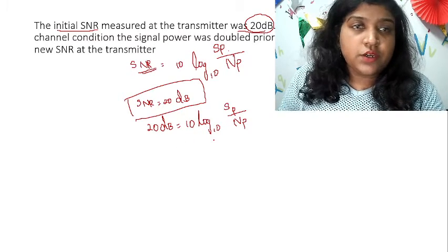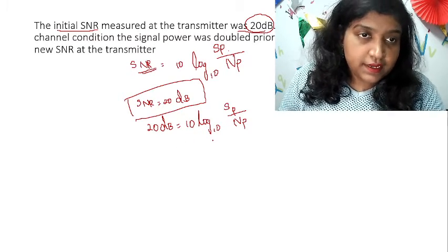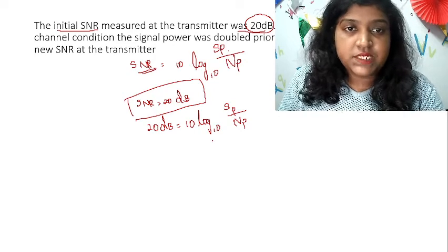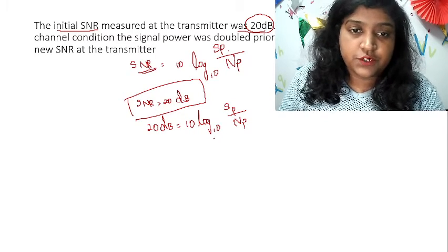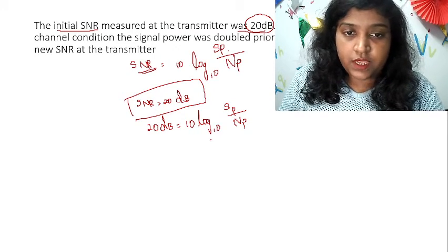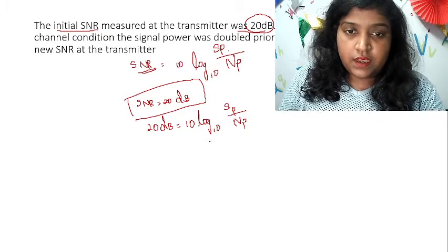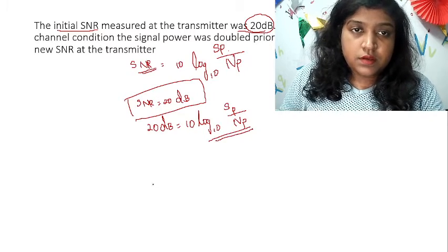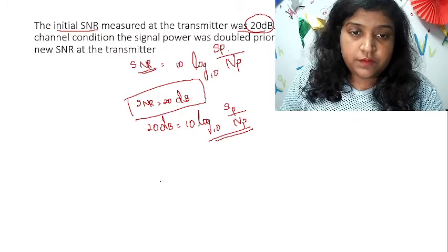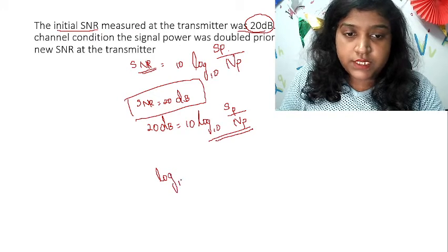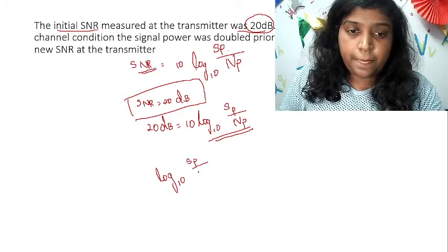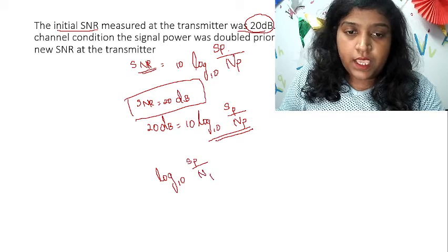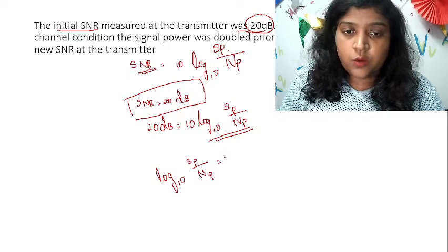In order to combat the channel condition, the signal power was doubled prior to transmission. This is your signal power. So that gives us log base 10 of SP divided by NP is equal to 2.